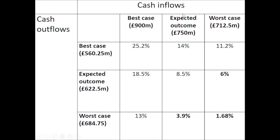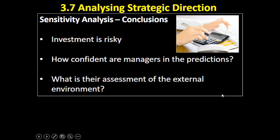Now in this table I've put all of these figures together. For example, in this box here I've got what happens if we have the expected outcome of £750 million in cash coming in — the expected outcome — but we save some money on the costs. In that case, the project will generate a 14% average rate of return. You can see all the other calculated figures here. I've highlighted in bold the figures that would be of most concern — the outcomes here that would be an issue.